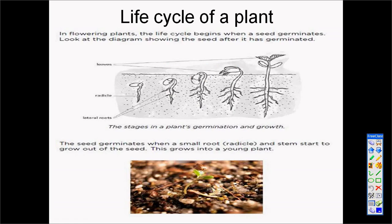All of us know that when we plant a seed, it becomes a big plant. What's happening inside the soil is that the seed germinates and grows inside the soil. It has a small root that grows deep into the soil, and after a while we can see the stem of the plant arising at the top of the soil. This process is called germination.